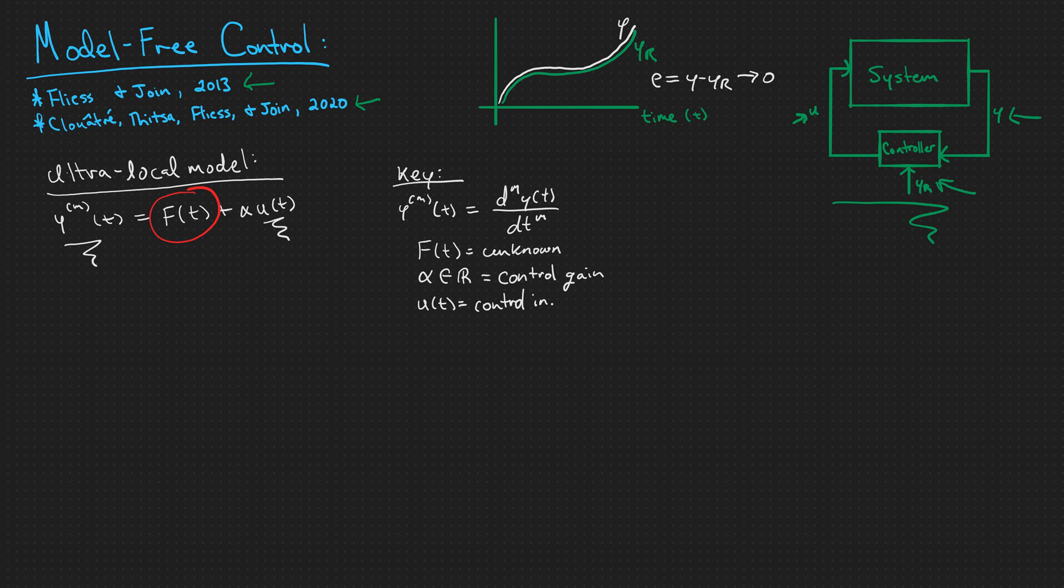So the only piece of this model that is unknown is f of t. And what does f of t represent? f of t represents everything in the system that y's m-th derivative and the control input does not. It primarily represents unmodeled dynamics and external disturbances onto the system. Now, if we wanted to devise a control input u, we would try to solve this model for u, which we can do. It would be 1 over alpha times y's m-th derivative minus f of t.